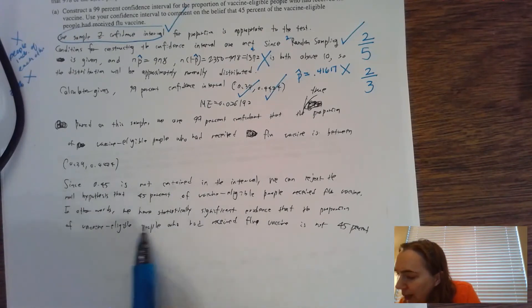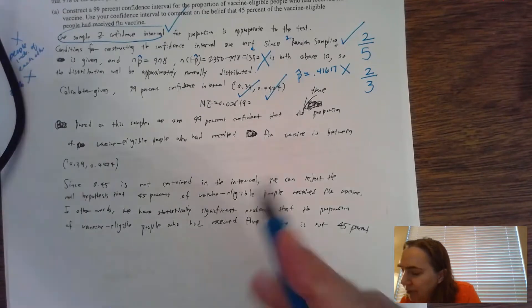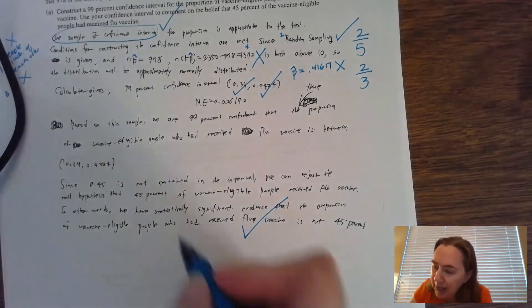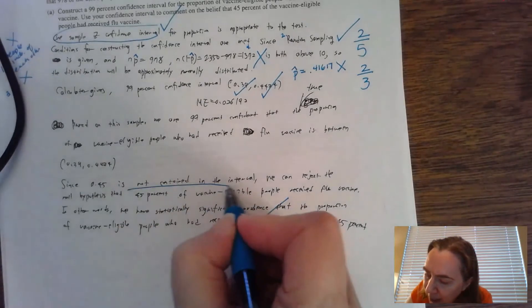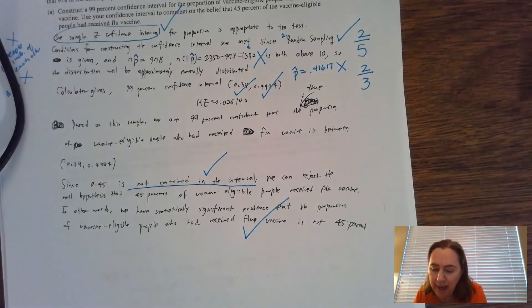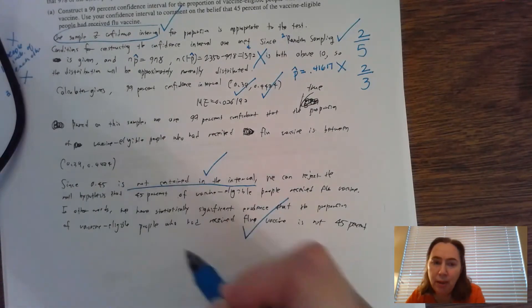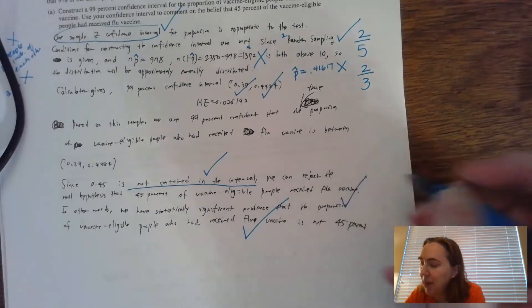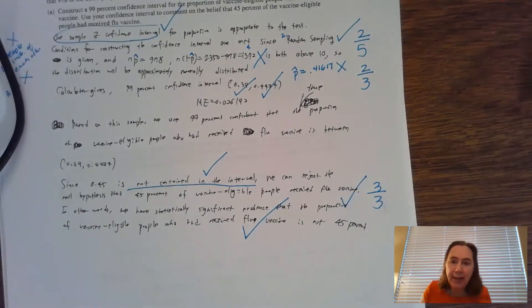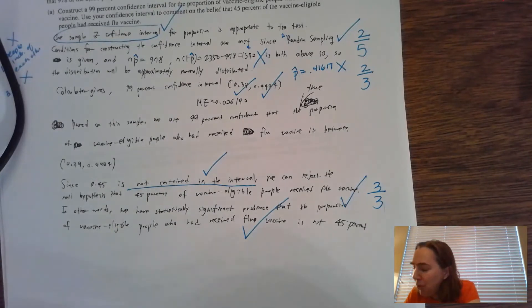Here it says 45% is not contained in the interval, so it is not plausible that it's 45%. I see that they have 'it's not contained in the interval'—check. There's one more check I'm looking for: is there context? They talked about vaccines and stuff like that, so my person got three out of three for that particular part. For part A, that's complete.